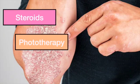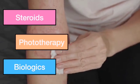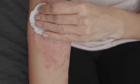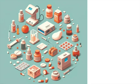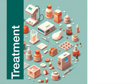Treatment includes steroids, phototherapy, and biologics. Management is based on the severity of the disease, typically measured by body surface area affected. For mild disease, considered less than 5% of body surface area, topical therapy is the first-line treatment. This includes high-potency topical corticosteroids, vitamin D analogues, coal tar, salicylic acid preparations, topical retinoids, and emollients to support the skin barrier.